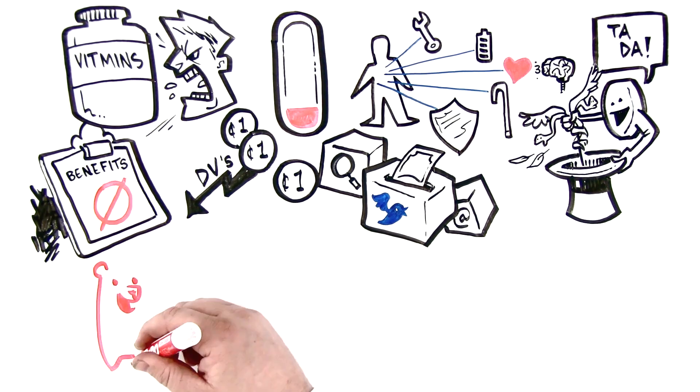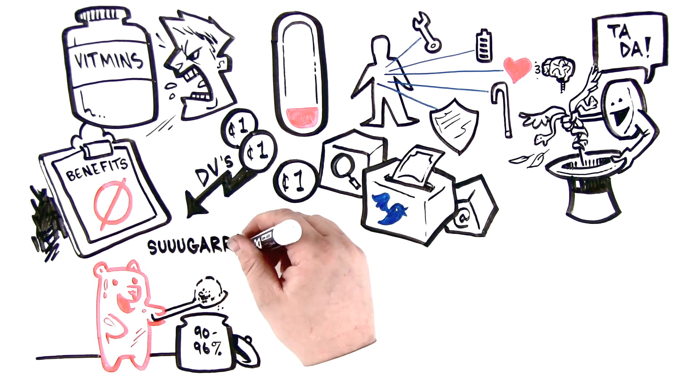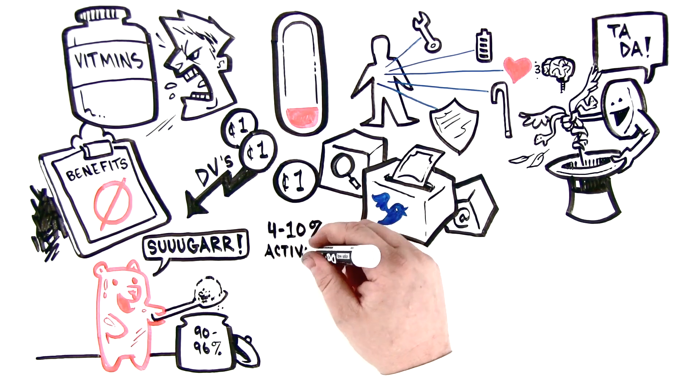Other bad choices include the gummy vitamins, with 90-96% sugar and only 4-10% actives on average.